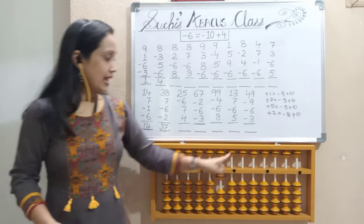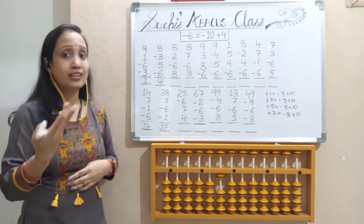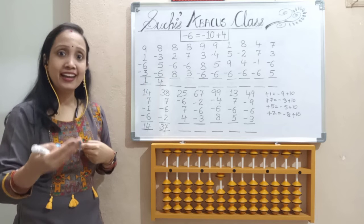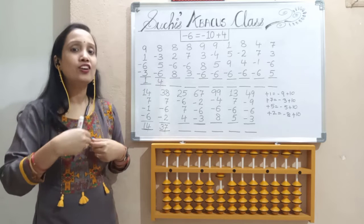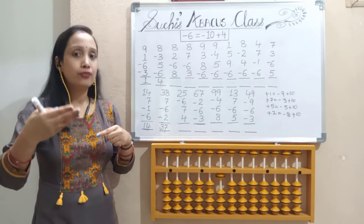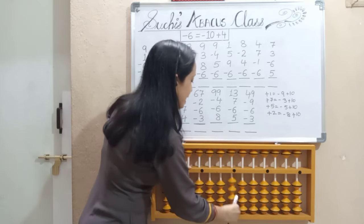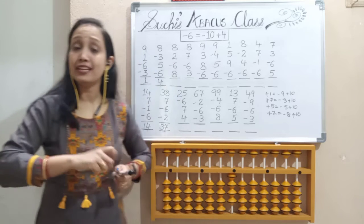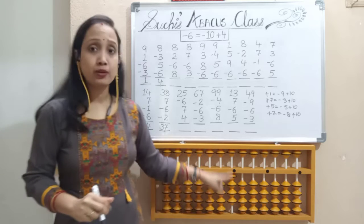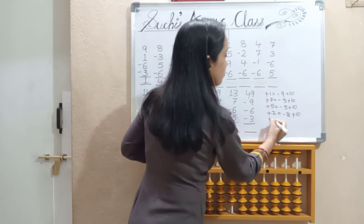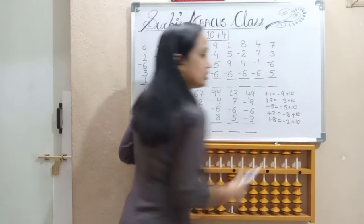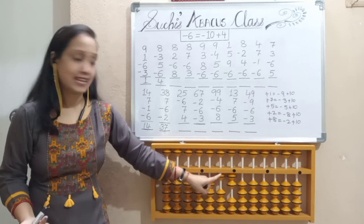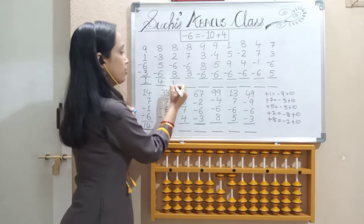Next, less 6. I need in 1's place 5 and 1 pinch out — not possible as I don't have 5 and 1. Go for formula — formula for less 6: for less, 10 will go out, and the friend 4 will come in — less 10 and 4. Next, add 8. I need 8; combination for 8 is 5 and 3, pinch in. I have 5 but not 3. Again, go for formula: add 8 equals less 2 and 10. So our answer: in 10's place is 10 and 1's place is 2 — it's 12.